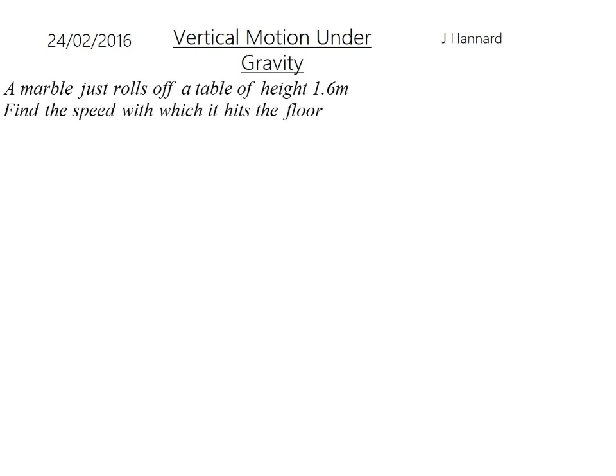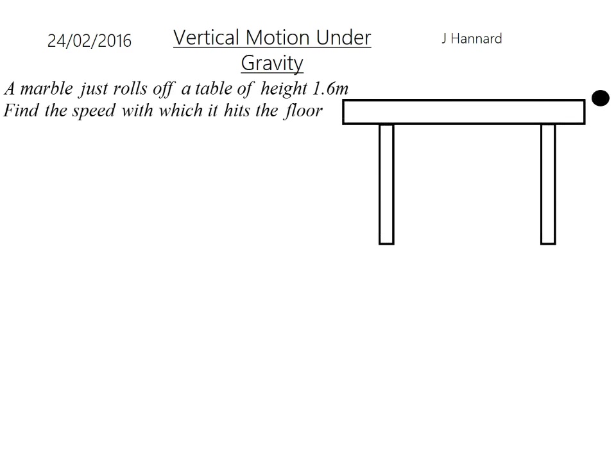Let's do an example. A marble just rolls off a table of height 1.6 metres, find the speed with which it hits the floor. So that's a table, and this PowerPoint is pretty much all done by my teacher. But there's a start, and that is the marble, and it's rolling off, and it drops 1.6 metres down to the finish. We'll list our variables still, so you've got SUVAT.